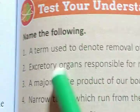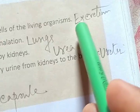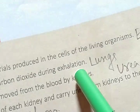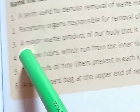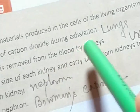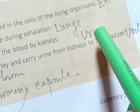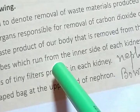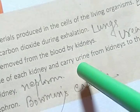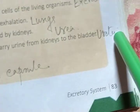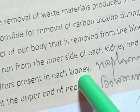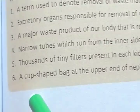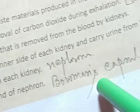Now test your understanding. Name the following: The term for removal of waste materials from cells of a living organism — excretion. The excretory organ responsible for removing carbon dioxide during exhalation — the lungs. The major waste product removed from blood by kidneys — urea. The narrow tubes running from each kidney to the bladder — ureters. The thousands of tiny filters in each kidney — nephrons. The cup-shaped bag at the upper end of the nephron — Bowman's capsule.